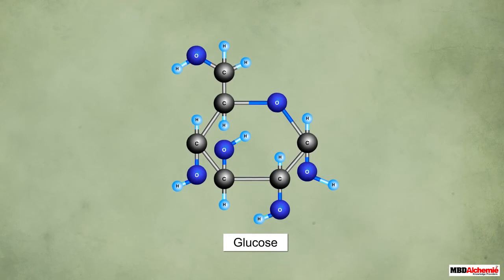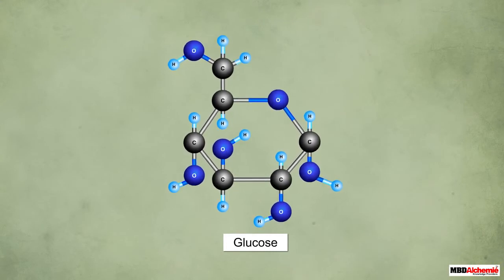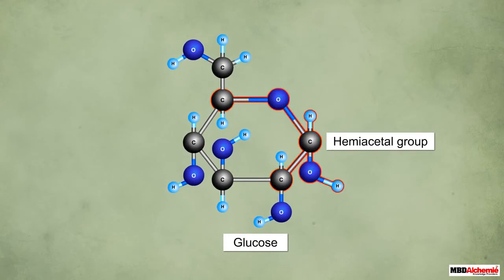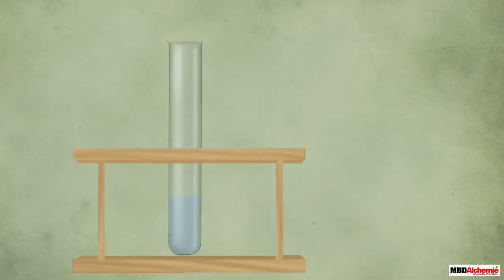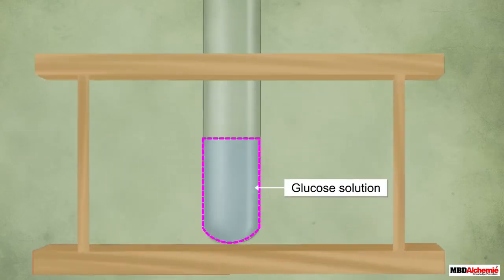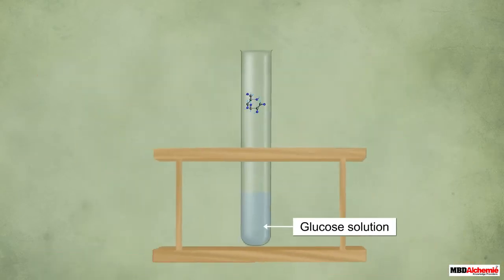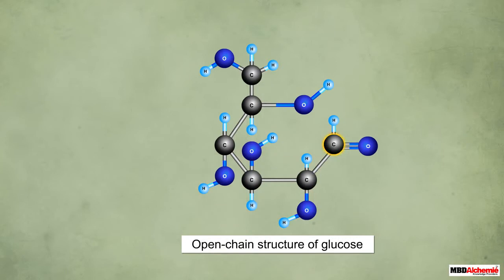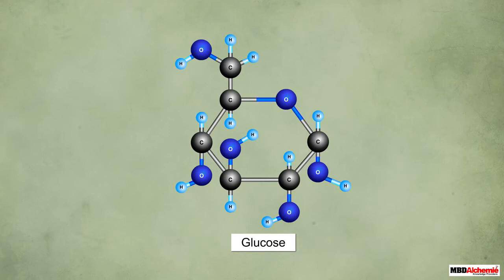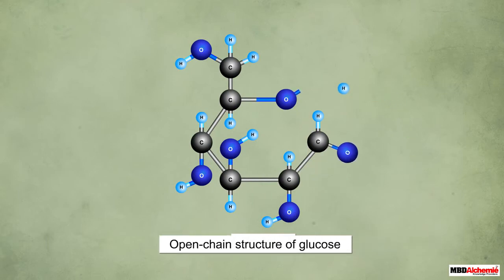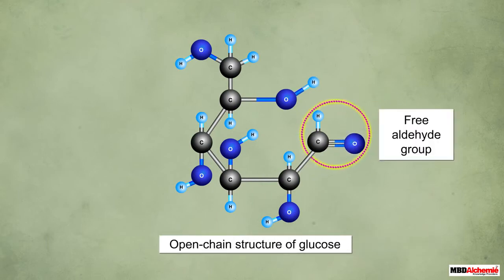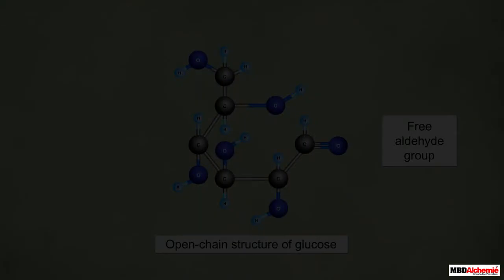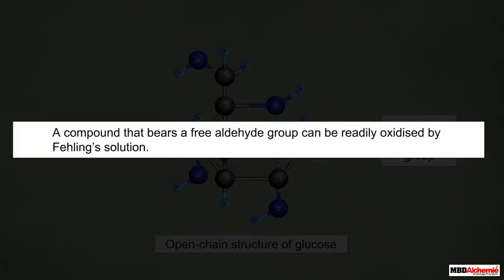Glucose is a monosaccharide that has a cyclic structure with a free hemiacetal group. In the solution phase, the ring structure of glucose opens up at the carbon bearing the hemiacetal group. During the ring opening, the hemiacetal group changes to a free aldehyde group.